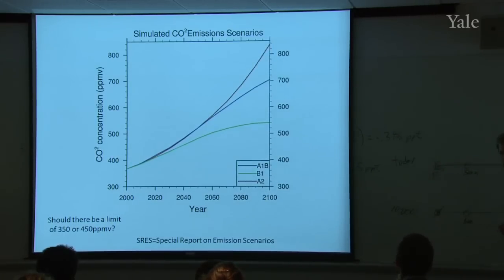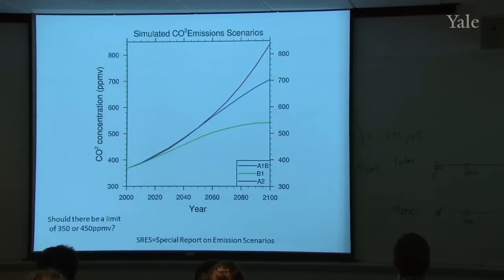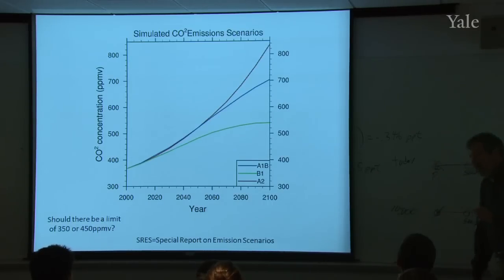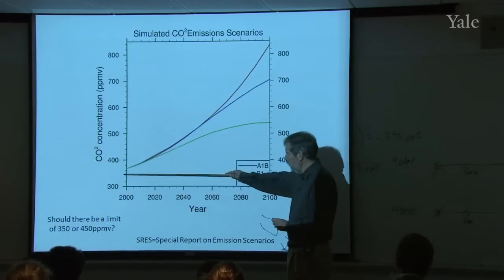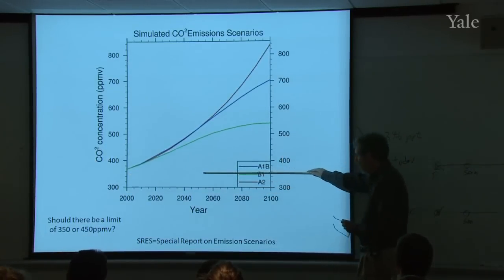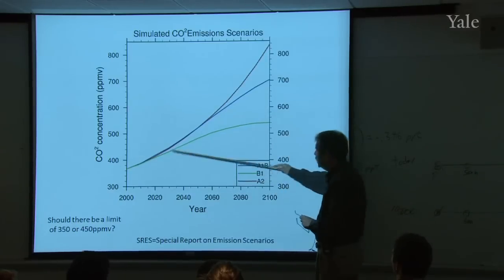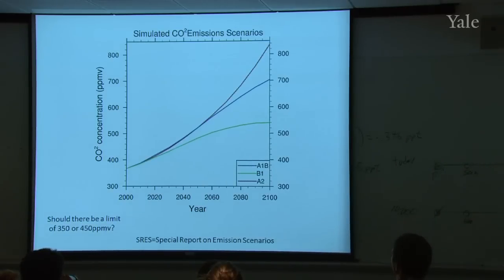You could put that limit right there on this diagram. It helps you to understand how far in exceedance of that number we are and will be in the future. Any questions on this diagram?